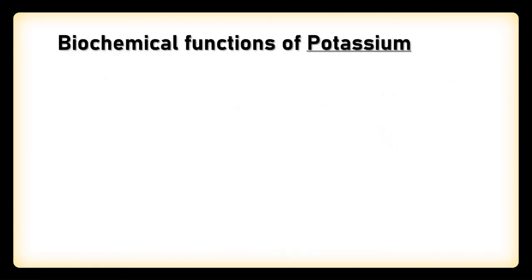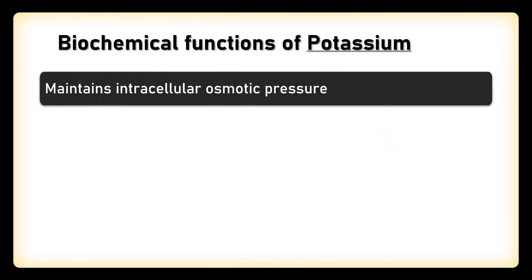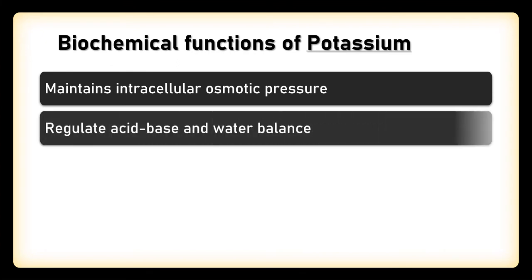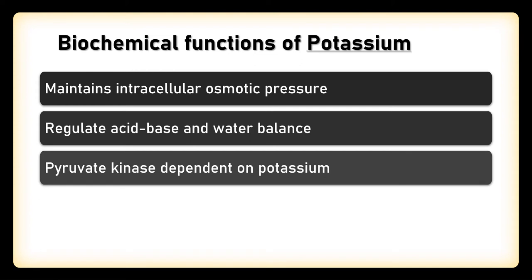Potassium is an electrolyte and hence it helps to maintain the intracellular osmotic pressure. It is required for the regulation of acid-base and water balance. The enzyme pyruvate kinase, which is one of the enzymes in the glycolysis pathway, is dependent on potassium.